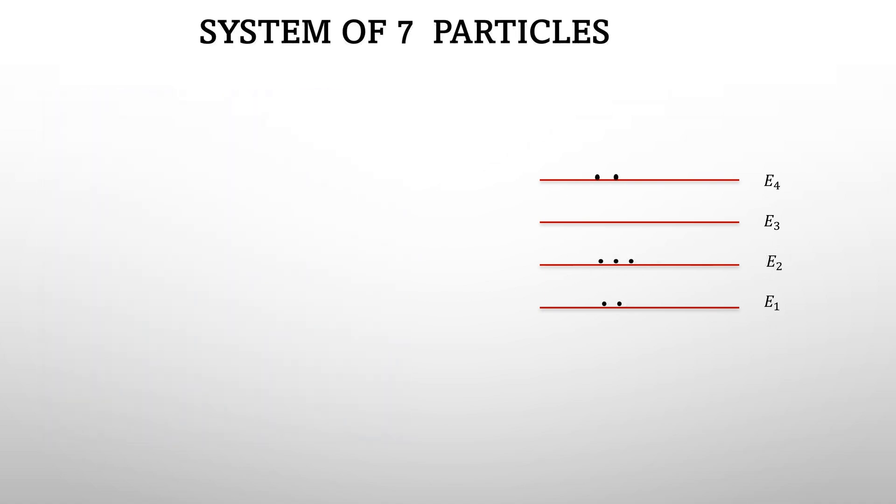E1 state contains two particles which have energy E1, similarly E2 state contains three particles at energy E2 and so on. So when we say energy of the system, it means average energy of all the particles.